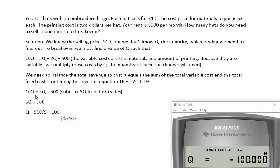Now we can subtract 5Q from both sides. So 10Q minus 5Q is 5Q. So 5Q equals 500. Divide through both sides by 5. So Q equals 100.